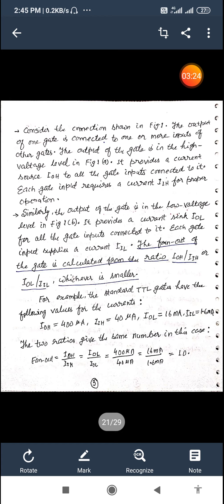For example, we can say that the standard TTL gates which is one of the standard IC logic families have the following values for the currents. This is the standard values which is taken from the data sheet. So IOH is given as 400 micro ampere, IIH is given as 40 micro ampere, IOL 16 milli ampere, IIL 1.6 milli ampere.